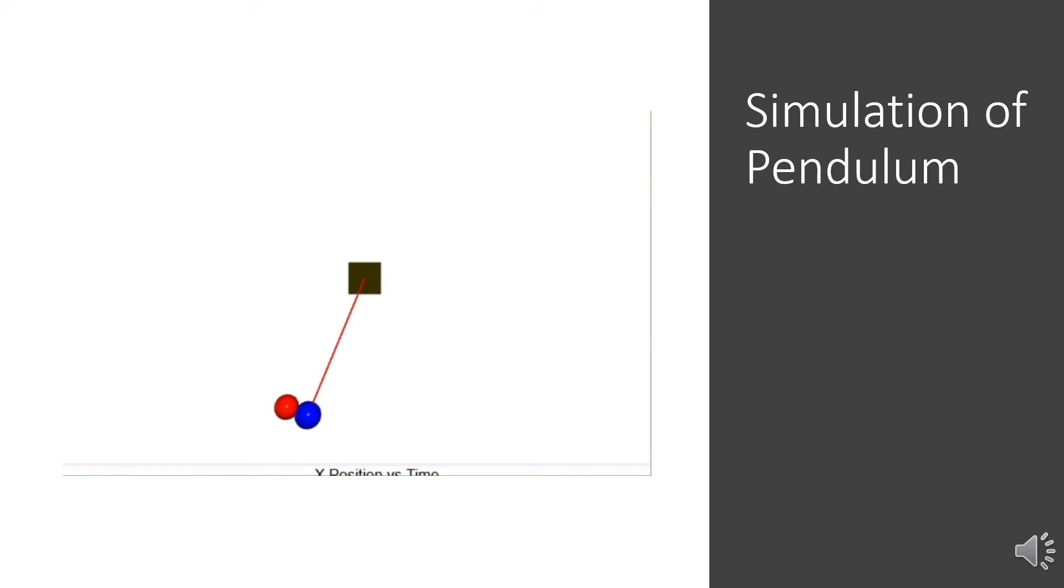Here's the simulation of the pendulum and the tracker data presented together. As stated before, the low frame rate of the camera leads to the jumpiness of the red ball, which is the ball representing the observed data. As you can see, the two balls undergo nearly the same motion with approximately the same amplitude.